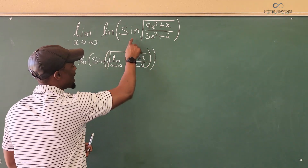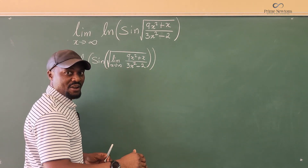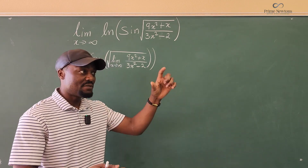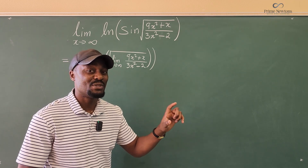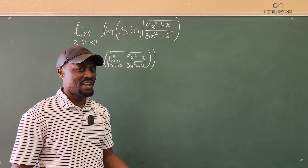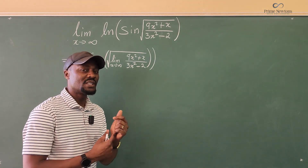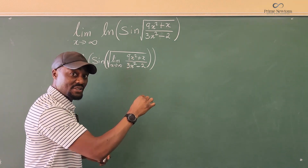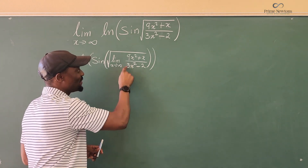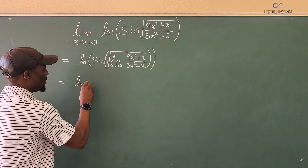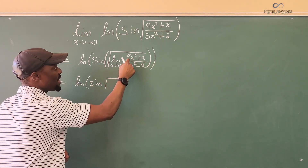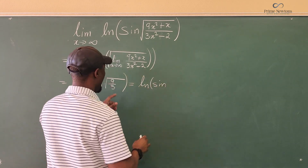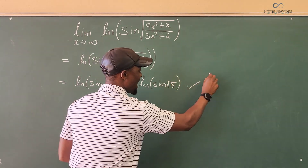I can do this because the limit of a function is the function of the limit, as long as the function is defined on the inside limit. Sine is defined here, so it's correct. From pre-calculus, I know that for a rational function, when the degree of the numerator equals the degree of the denominator, the horizontal asymptote is the ratio of the leading coefficients. So this becomes the natural log of the sine of the square root of 9/3, which is the natural log of sine of √3.